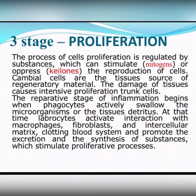The last stage of inflammation is proliferation. The process of cell proliferation is regulated by substances which can stimulate — mitogens — or suppress the reproduction of cells. The damage of tissue causes intensive proliferation of stem cells. The proliferation stage of inflammation begins when phagocytes actively swallow the microorganism or the tissue detritus. At that time, mast cells activate interaction with macrophages, fibroblasts, and intercellular matrix, and promote the extraction and synthesis of substances which stimulate the proliferative process.